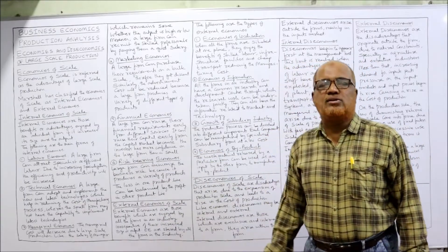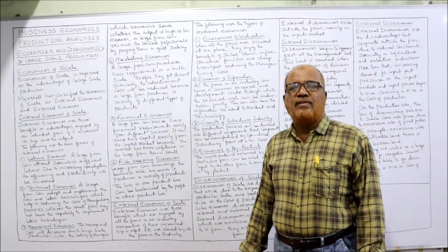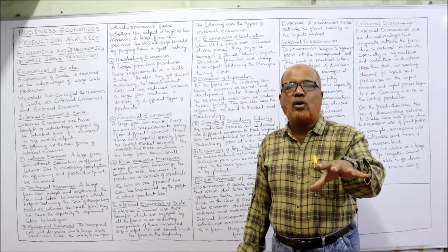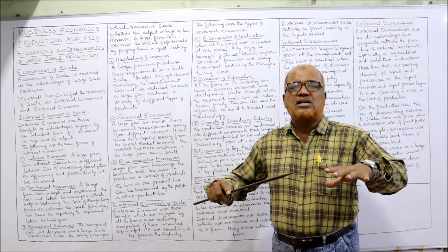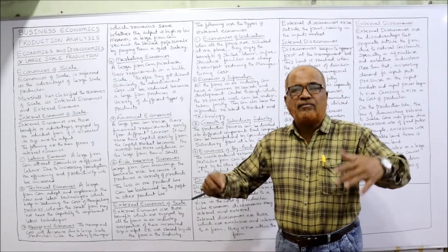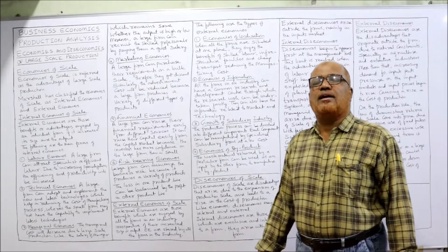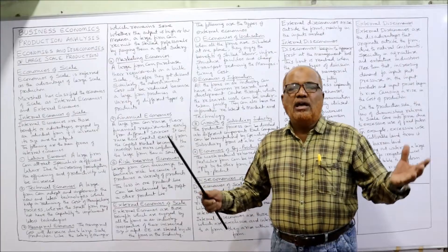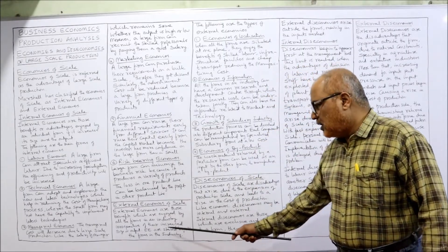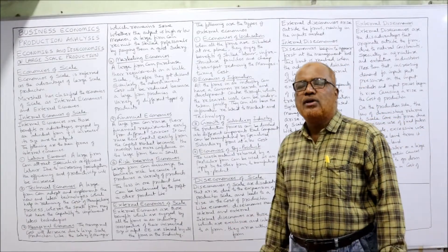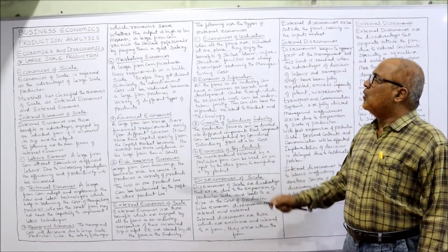So far I have discussed internal economies — those advantages which only the individual firm gets by expanding its business. Now external economies are those benefits which accrue to all firms if they are located at one place, whether they produce goods on large scale or small scale. External economies are advantages arising from outside the organization. They are enjoyed by all firms in an industry irrespective of their size, as long as all firms are located at one place.